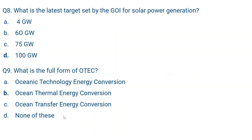Question number eight: What is the latest target set by the Government of India for solar power generation? The options are 4 gigawatt, 60 gigawatt, 75 gigawatt, or 100 gigawatt. The correct option is 100 gigawatt — the Government of India's target is to generate 100 GW of solar power by 2022.